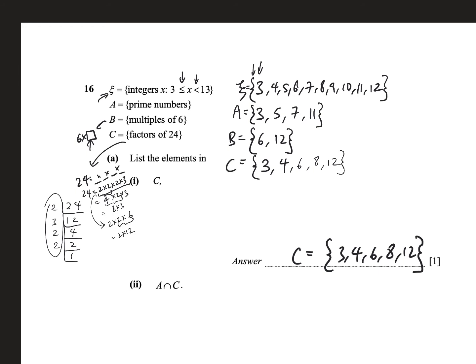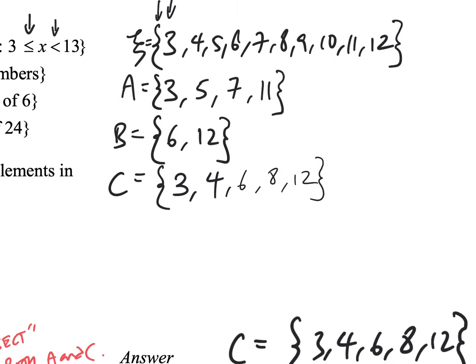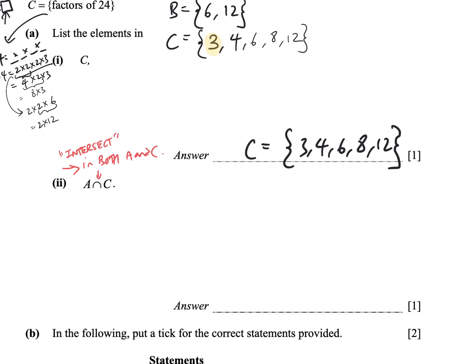Now, for part B, we're looking at A intersect C. That means these elements must be in both A and C. This means in both A and C. The technical term is intersect, which means it's in both A and C. So, what elements are in both A and C? Let's try to take a look. We have 3, it's in both A and C. 4, no, 6, no, 5, no. Just 3. Only 3. So, this set, A intersect C, only has 1 element in it, which is 3.